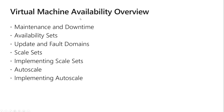We'll talk about the availability overview, maintenance and downtime, availability sets — which we can abbreviate as AS — update domains, fault domains, scale sets, implementing scale sets, auto scale, and implementing auto scale.